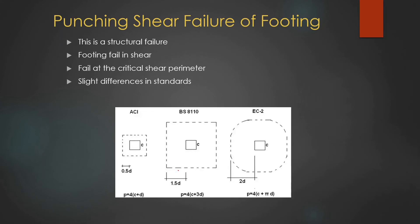Punching shear failure of the footings is a structural failure mode. The footing will fail along the punching shear perimeter. We have to check the punching shear capacity of the footing based on the applied load, the area of the foundation, and the pressure applied by the soil. The punching shear perimeter is defined based on a critical perimeter. Different standards have different punching shear perimeter definitions — for example, ACI has a different value than BS, and BS has a different value than Eurocode — so you must consider the applicable standard.